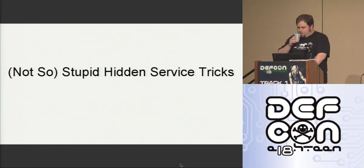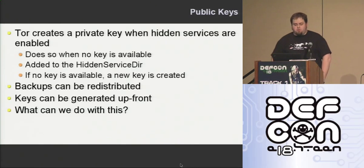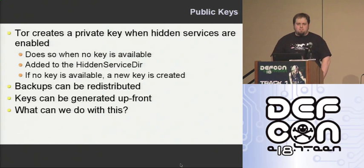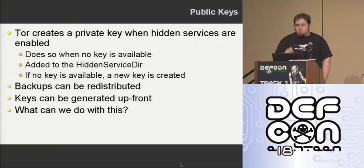So I'm going to change gears a little bit and talk about some other features that hidden services give us that make this a really nice way to manage your command and control server. As we mentioned earlier, Tor uses public keys to communicate, to let the Tor network know how to get to the server. When it does that, it creates a private key on the server as well as the hostname for the dot onion domain. What's nice about this is these are just files on the system — you can copy and move them wherever you want, so if this server goes down for some reason, you can redistribute it to another. And you can generate a lot of these keys up front by running a script that keeps clearing out that directory and restarting Tor — it will just keep creating new keys for you until you have as many as you like.